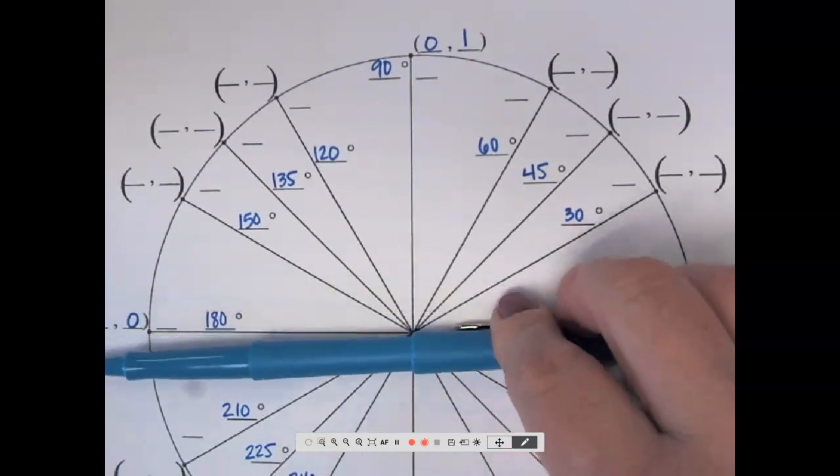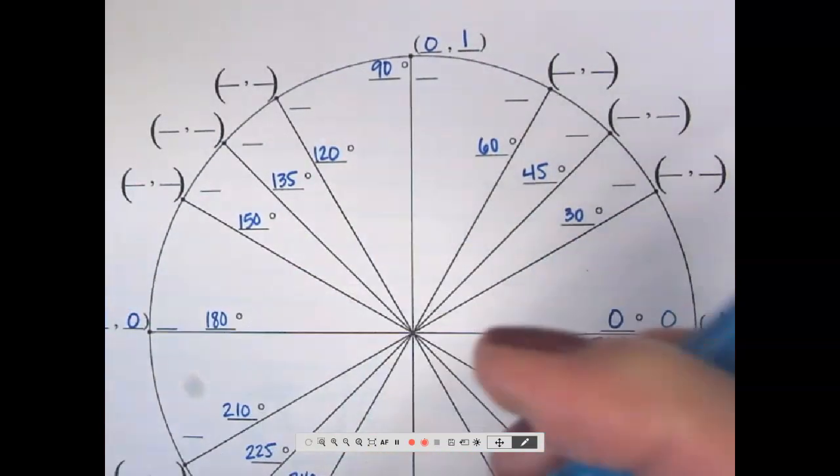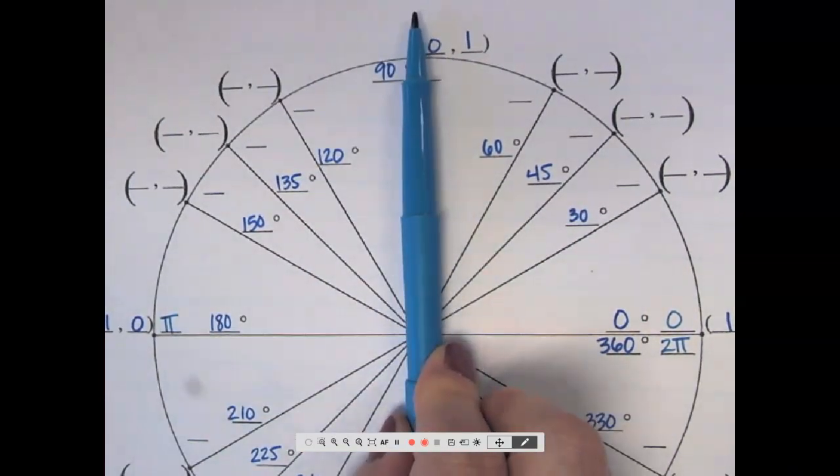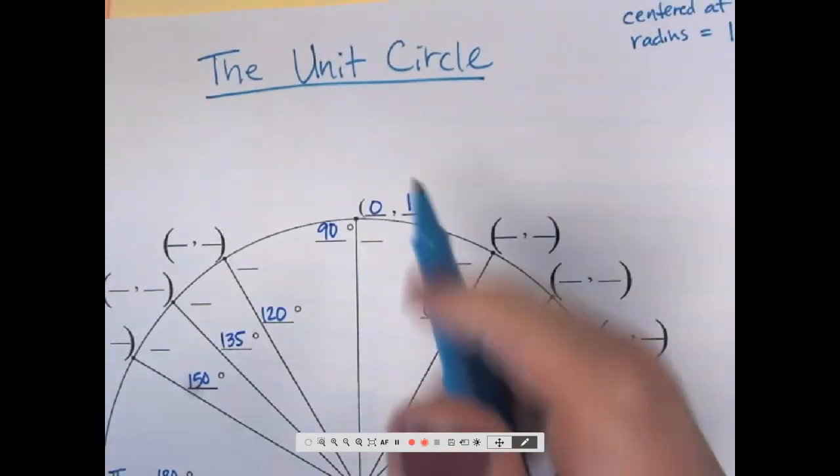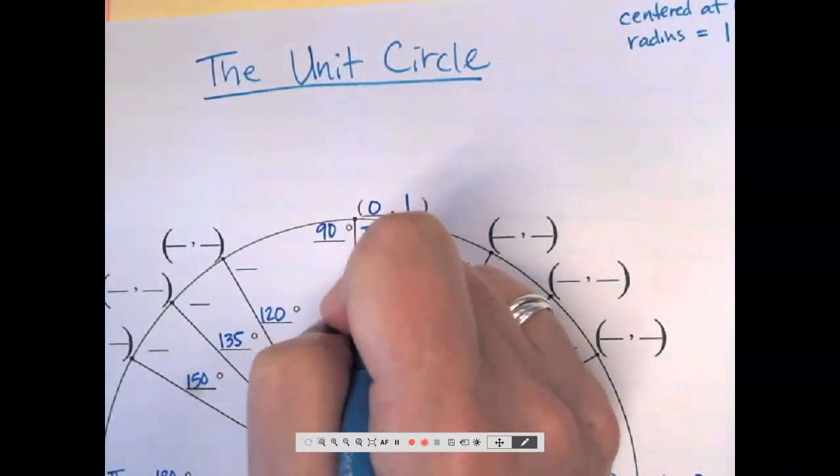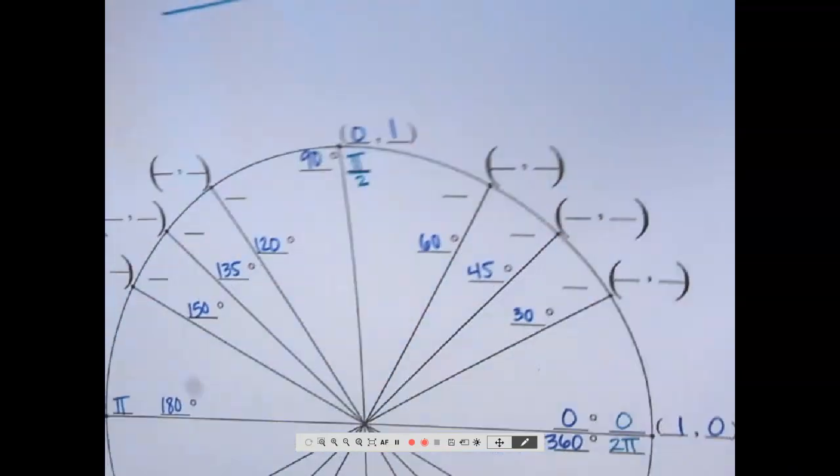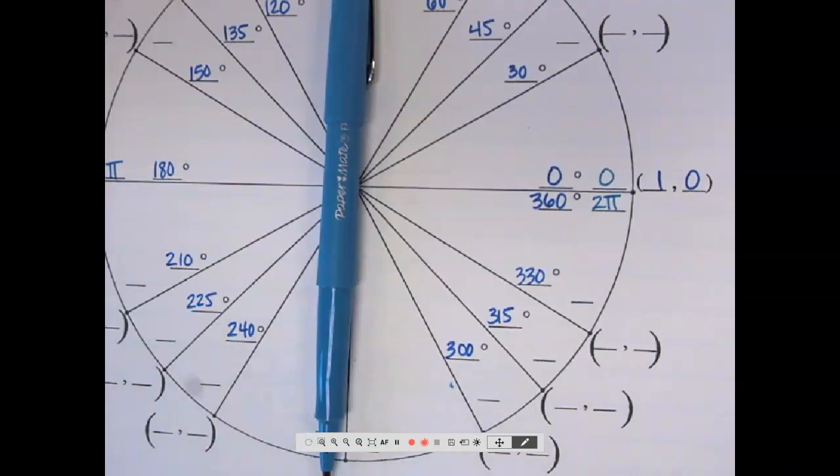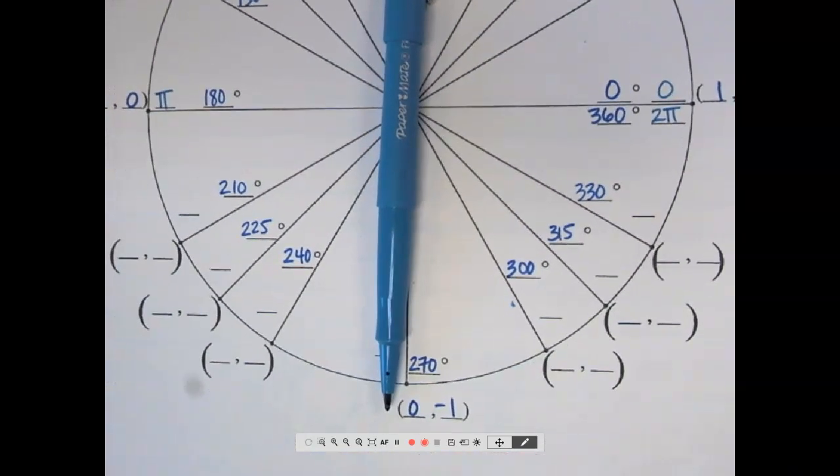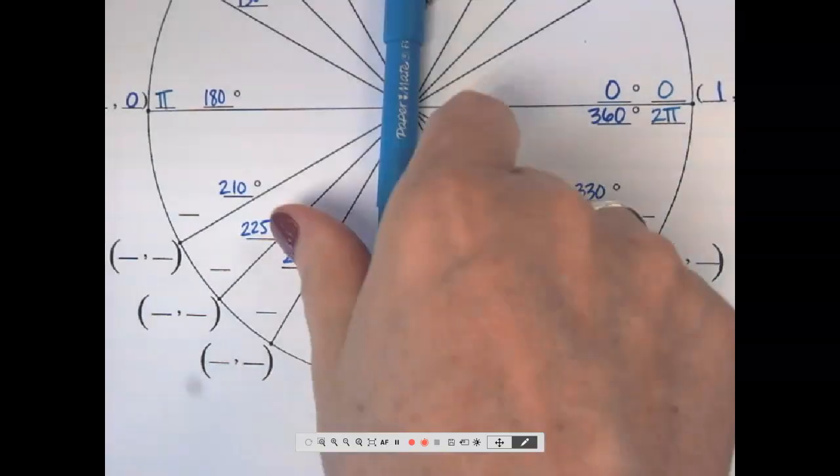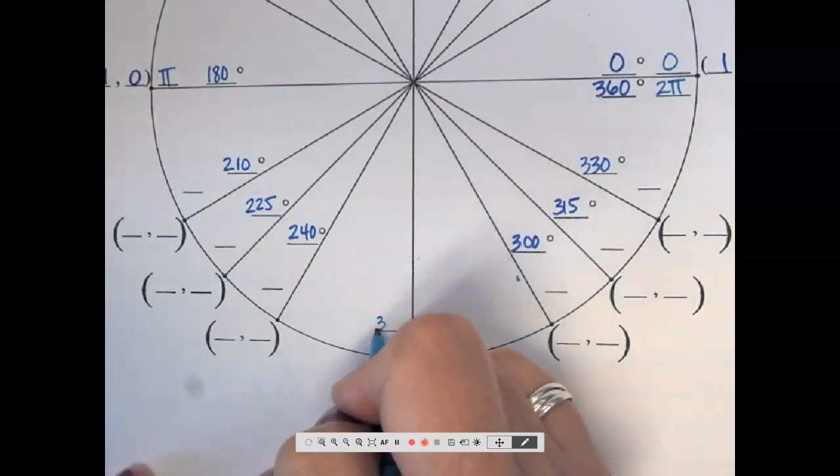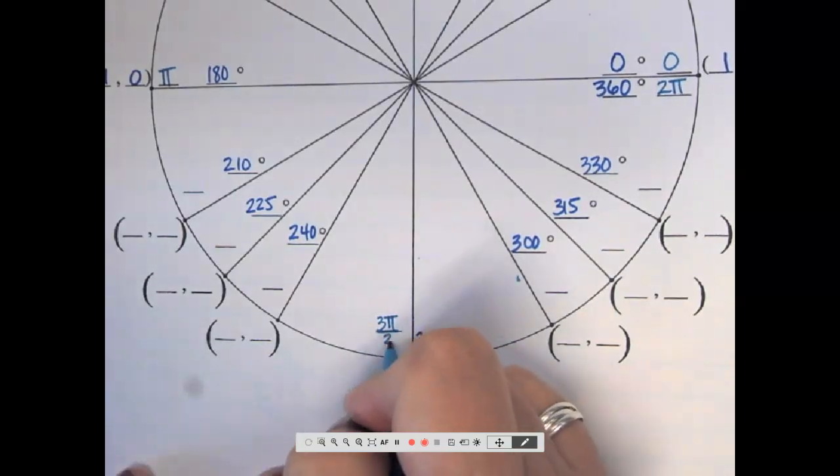Actually, let's do this one first because that's a little bit easier. What's 180 equal to? Pi radians. So what if I went halfway to pi? Pi over 2. What if I went from pi halfway to 2 pi? Would that be 1 and a half pi? Right? Halfway between 1 and 2 is 1 and a half. But improper fraction for 1 and a half is 3 halves. So we usually call it 3 pi over 2.